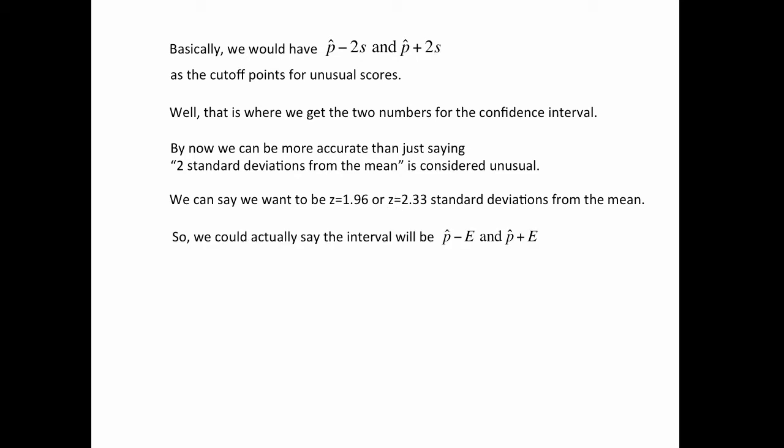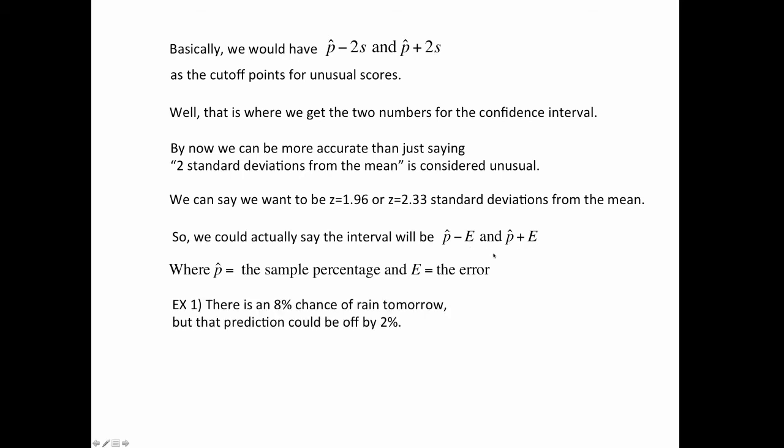So basically, we can say there's the sample percentage, and then it can't be 100% accurate, so we're going to have some error. That's what this E is. And so the interval comes from, you say, take the sample plus the error, take the sample minus the error. So here's a small example. I say there's an 8% chance of rain, but my prediction could be off by 2% plus or minus. So then the confidence interval would look like this. The percent or chance of rain is somewhere between 6% to 10%.